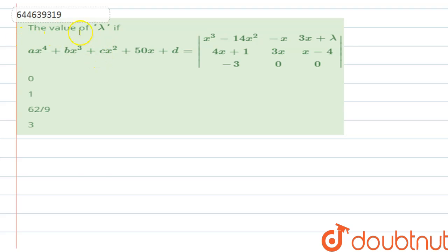Hello guys, in this question we are to find the value of lambda. If ax to the power 4 plus bx cube plus cx square plus 50x plus d is equals to x cube minus 14x square minus x.